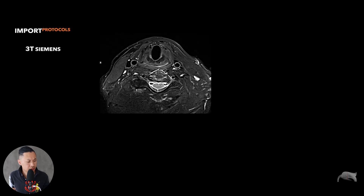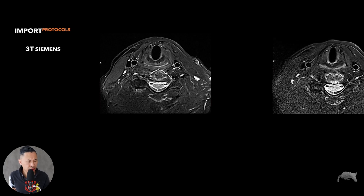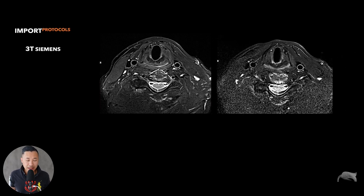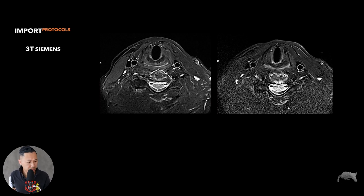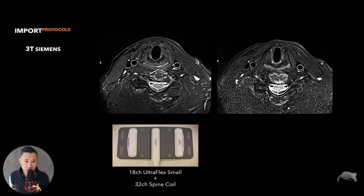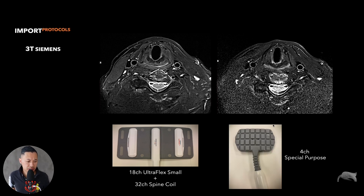My last example: my friend got very good larynx images and sent me the protocol, but I got images like this. Did I do something wrong, or did he send me a bad protocol? No — he sent me a good one, but he was using the Ultra Flex small coil combined with the spine coil, so he got very good signal all around. I was only using the special purpose coil in the front, so I have signal there but I'm losing a lot of signal behind. Again, knowing what he did is very important.